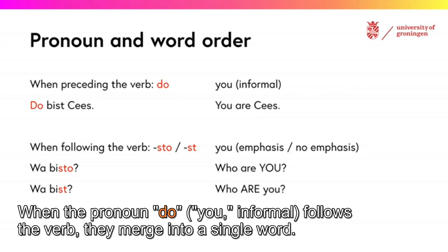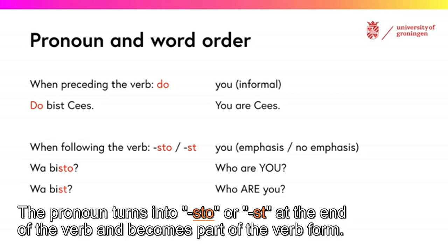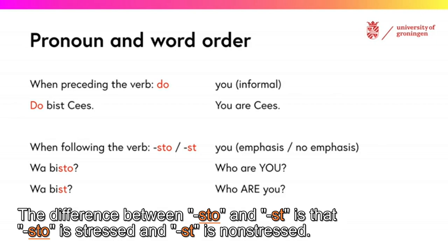When the pronoun 'doe' (you, informal) follows the verb, they merge into a single word. The pronoun turns into 'stow' or 'st' at the end of the verb and becomes part of the verb form. The difference between 'stow' and 'st' is that 'stow' is stressed and 'st' is non-stressed.